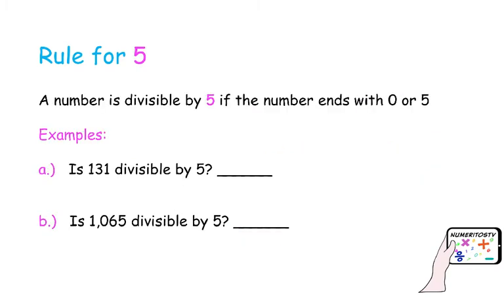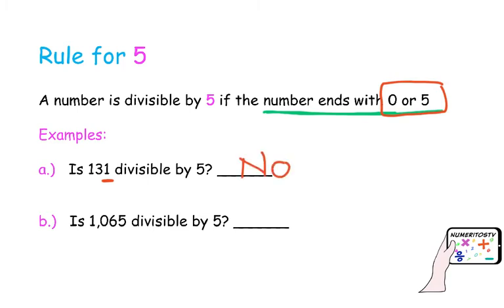The rule of 5. How do we know if a number is divisible by 5? This rule is also very easy, because you only check the ending of the number. If the number ends with 0 or 5, then the number will be divisible by 5. Is 131 divisible by 5? Check the ending: 1. 1 is not 0 or 5, so 131 will not be divisible by 5. What about 1065? Just by checking the ending, which is 5, we can say that 1065 is divisible by 5.